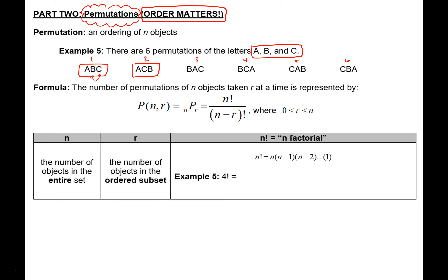You have a formula you can use to calculate permutations. This exclamation point is called a factorial. What that means is you start at whatever the number is and multiply in descending order all of the whole numbers lower than it. So four factorial means 4 × 3 × 2 × 1. You always stop at one because multiplying by zero would give zero. So four factorial equals 24.